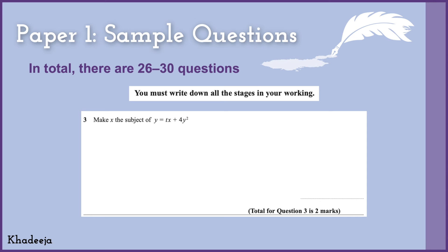Here's a sample question: 'Make x the subject of this equation,' where y = tx + 4y². You have to rearrange to make x the subject. This is Question 3 and is worth two marks — probably the lowest marks a question can have. You write your final answer on the dotted line provided, and the white space is for showing your working.